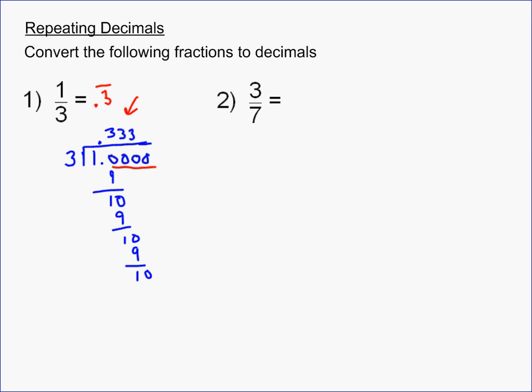And again, if you had something like 4 and 1 third, that would just be 4.3 repeating. That's how you deal with mixed numbers. It's very easy. Just worry about the fraction part, not about the mixed part.